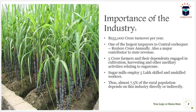Before starting, let me explain the importance of the sugar industry using some facts and figures. Currently, the annual turnover of this sugar industry is rupees 55,000 crore, and it is one of the largest taxpayers to the central exchequer, paying rupees 2,600 crore annually. You can see the importance of this industry in terms of revenue contribution to the center as well as to state exchequers.